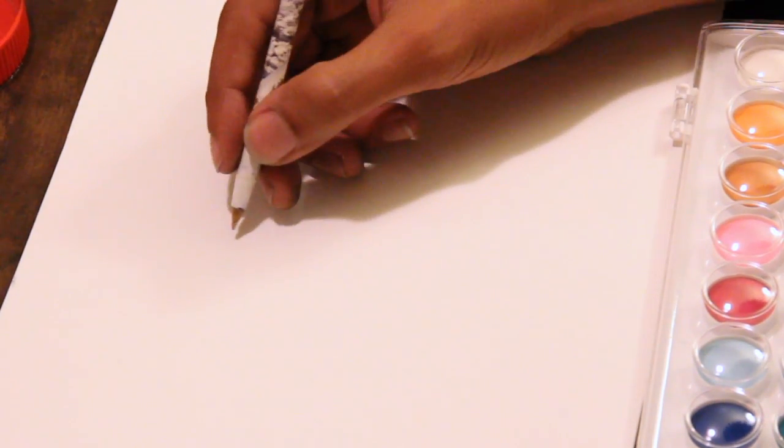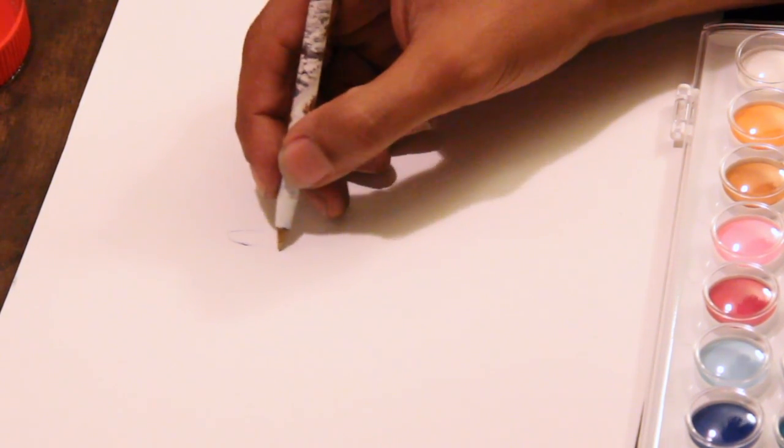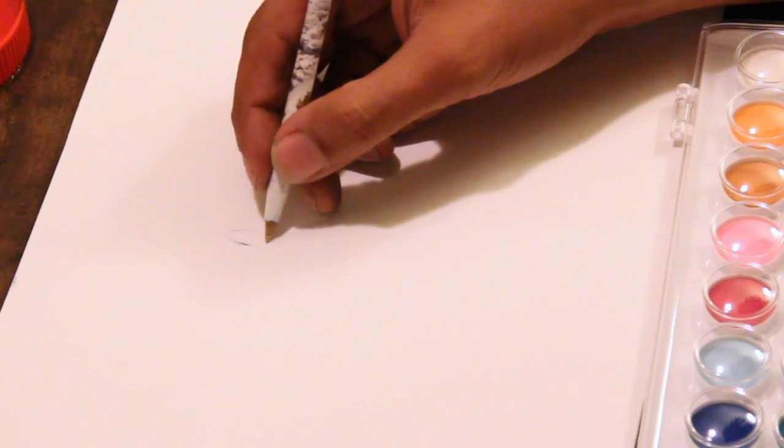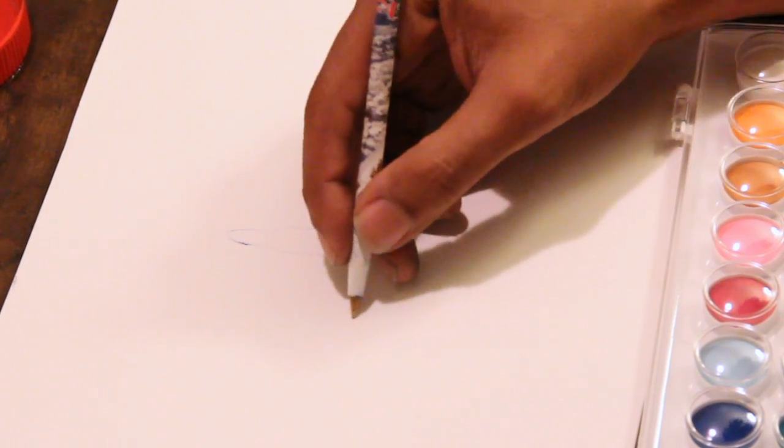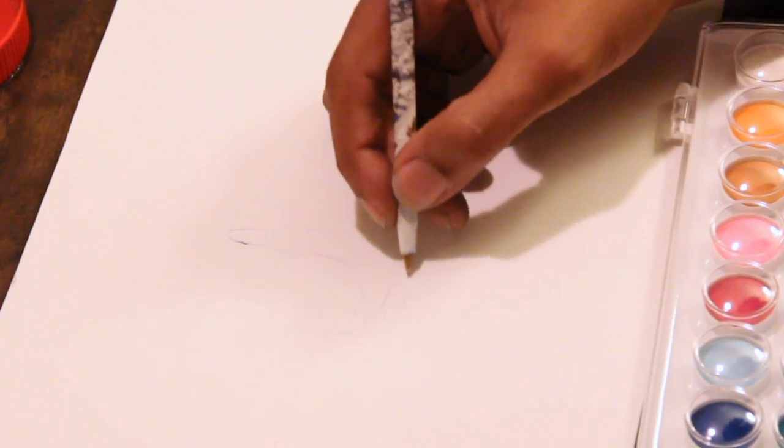First, I'm going to lightly sketch with pen. Just go in there and draw my fuchsia plant.